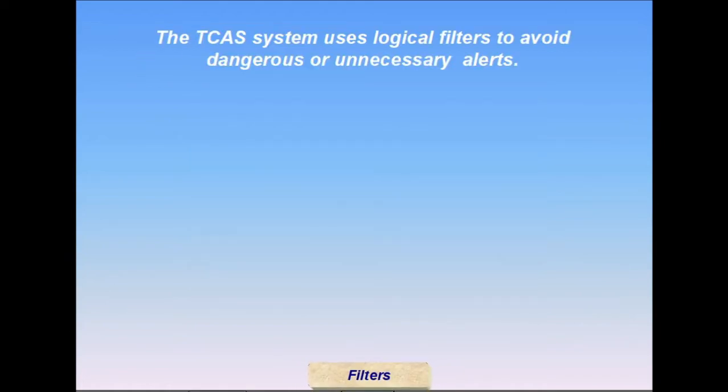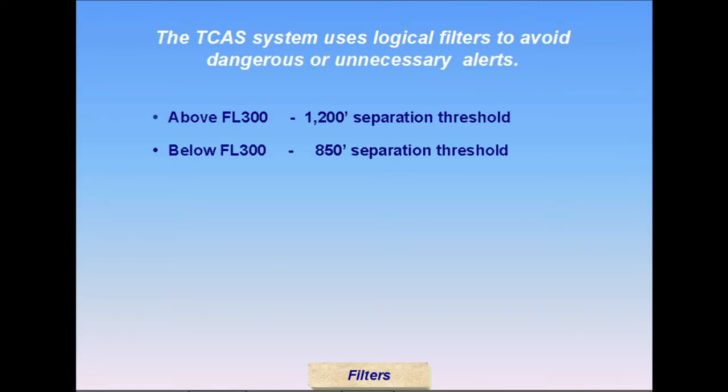The TCAS-2 system applies certain logical filters to avoid issuing dangerous or unnecessary traffic alerts and advisory commands. TCAS does not issue a TA when standard IFR separation exists. Aircraft separated by 2,000 feet above or 1,000 feet below flight level 290 are displayed as proximate traffic within the TA alert area. RAs remain active, however, and failure to decrease vertical rate prior to level off at assigned altitude may cause unnecessary RAs in this situation.